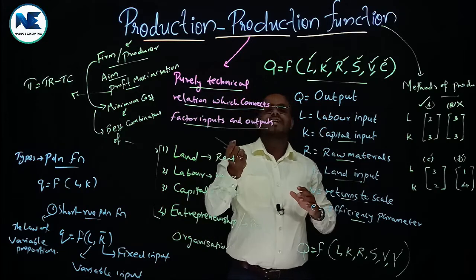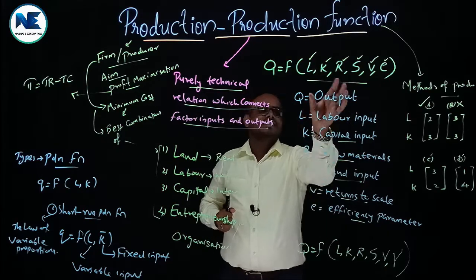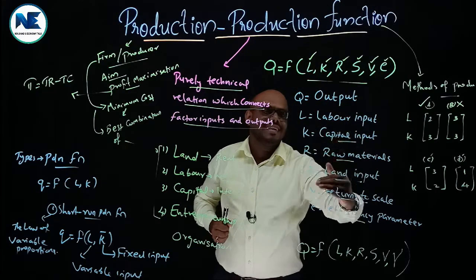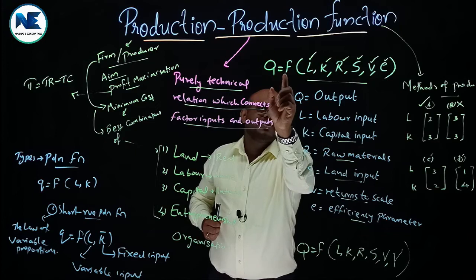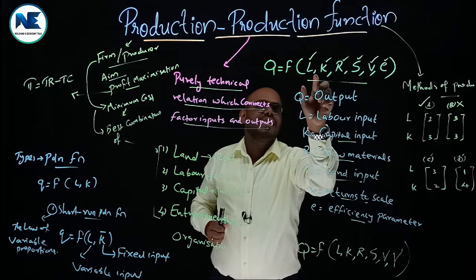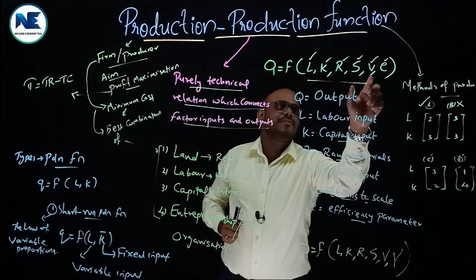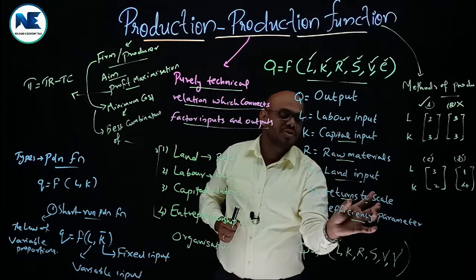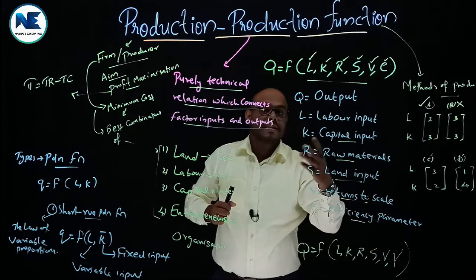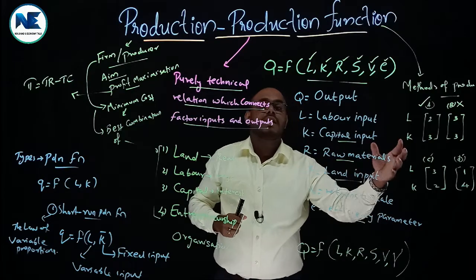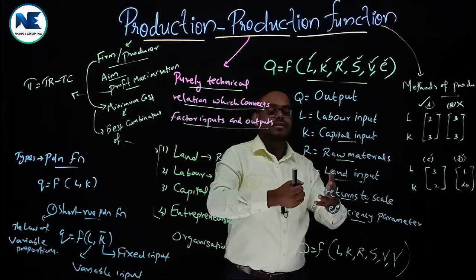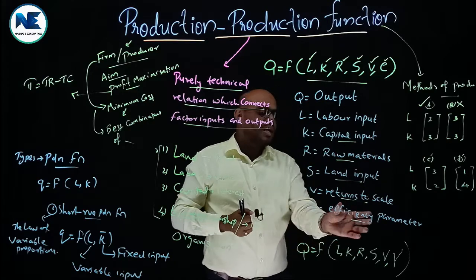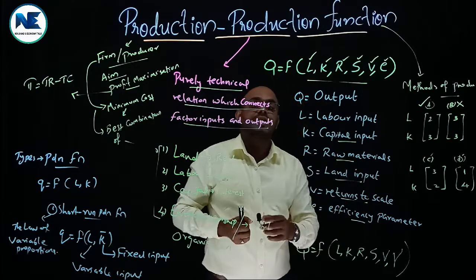The production function is a functional relationship between physical input and physical output — a purely technical relation which connects factor inputs and output. The general mathematical form is Q = f(L, K, R, S, V, E): L is labor input, K is capital input, R is raw materials, S is land input, V is returns to scale representing long-run production analysis (constant, increasing, or decreasing returns to scale), and E is the efficiency parameter.